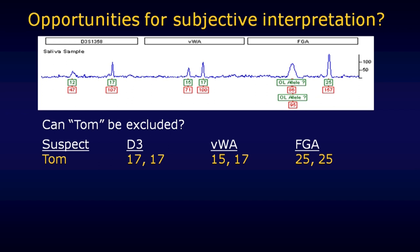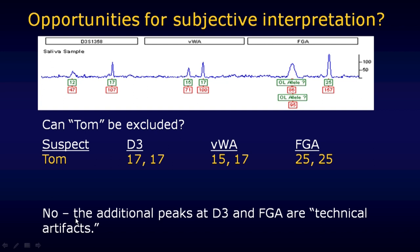What are we left with? For this evidence sample we see the 25 at the FGA locus, an artifact (blob) we can discount, a 15-17 at VWA — a good match to suspect Tom — and a 17 at D3 that he could have been the source of, plus a 12 that might be just technical noise. So at the end of the day, can Tom be excluded as a possible contributor? The answer is no — his alleles are showing up on the electropherogram, and the things that aren't his alleles can be dismissed as technical artifacts.